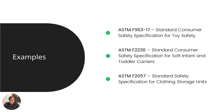We often see ASTM standards that are highly specific to a certain type of product, such as soft infant and toddler carriers, or clothing storage units. There are thousands of ASTM standards in existence, and these examples are just a fraction of them.